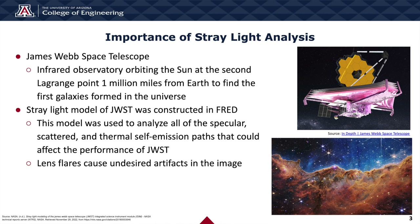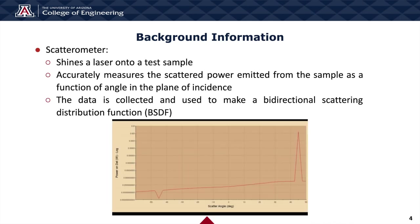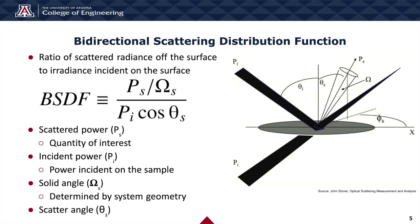Stray light analysis is essential for a system of this complexity, as even small amounts of unwanted stray light can compromise image quality, such as that of the images taken of the first galaxies formed in the universe. Scatterometers are devices used to measure the light scattering properties of a material. The scatterometer shines a laser onto a test sample and measures the scattered power emitted as a function of angle in the plane of incidence, collecting data used to make a bidirectional scattering distribution function (BSDF). The BSDF characterizes the scattered distribution of optical radiation from a surface, representing the ratio of scattered radiance to incident radiance, facilitating stray light analysis.